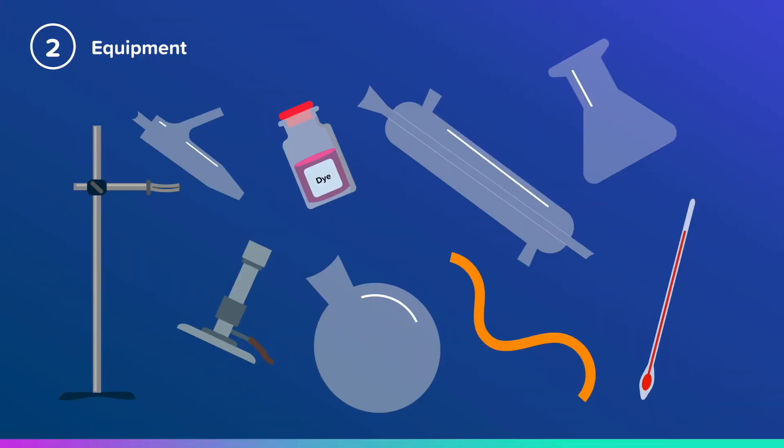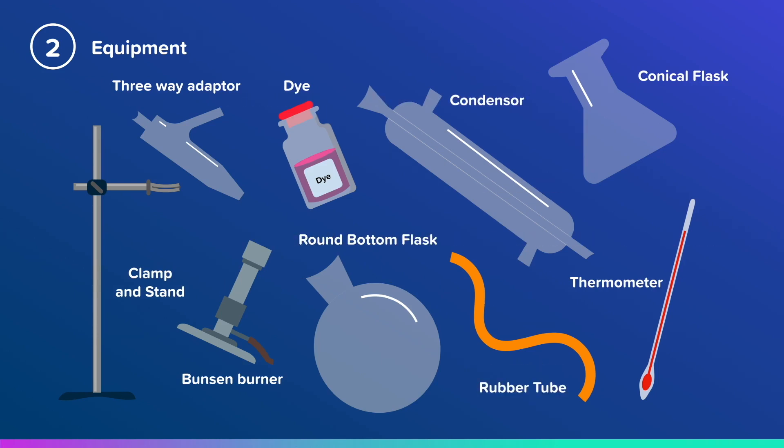So what equipment will we need? We'll need a conical flask, thermometer, clamp and stand, Bunsen burner, some dye, three-way adapter, a condenser, a round-bottomed flask, and a rubber tube.